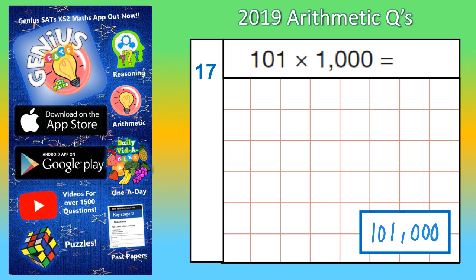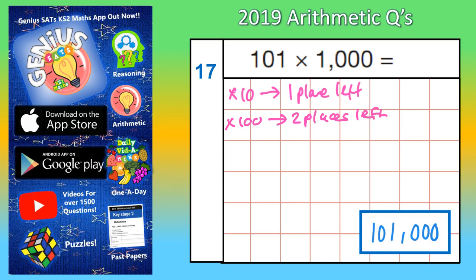But if you couldn't do it in your head, you could remember that because you're timesing by 1,000, you're moving the digits 3 places forward. Times 10 would be move the digits 1 place to the left. Times 100 would be 2 places left. And times 1,000, which is what we've got here, would be 3 places to the left.